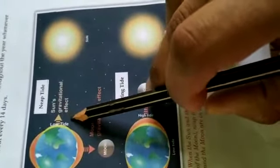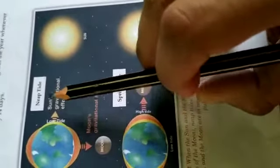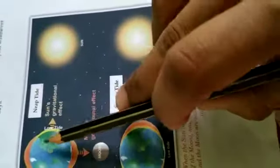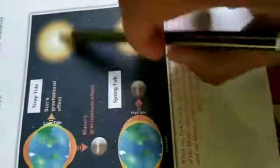We can also say that neap tides occur when the earth, moon, and sun form a right angle, a 90-degree angle.